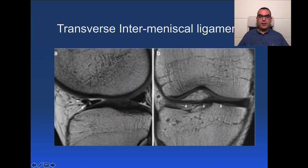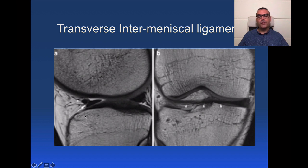Next is the transverse intermeniscal ligament, a transverse ligament coursing between the anterior horn of the medial and the lateral meniscus. It is a transverse horizontal fiber band connecting both anterior horns, and it can be seen at parasagittal cuts within the central aspect of the joint. It can be mistaken for a meniscal tear. This is a prominent transverse intermeniscal ligament.